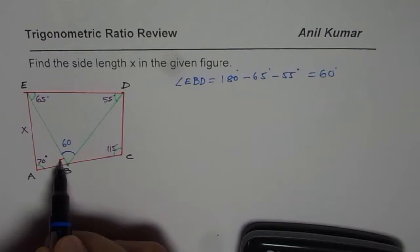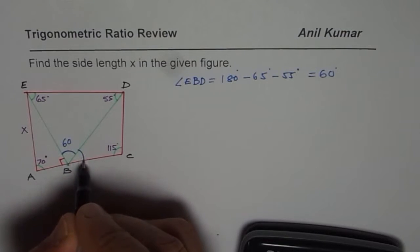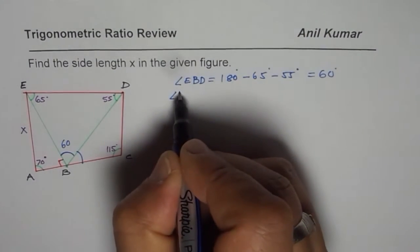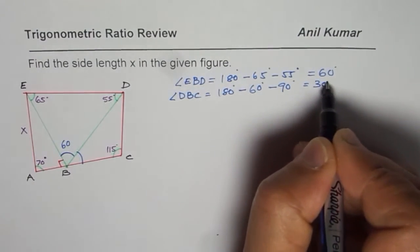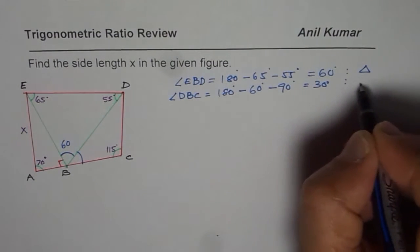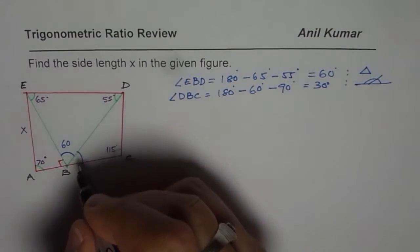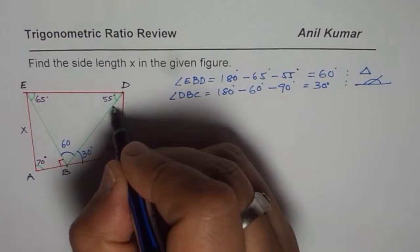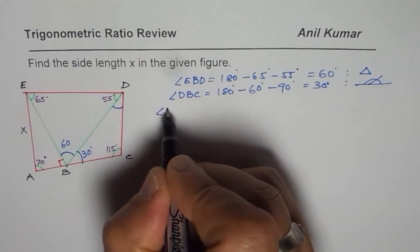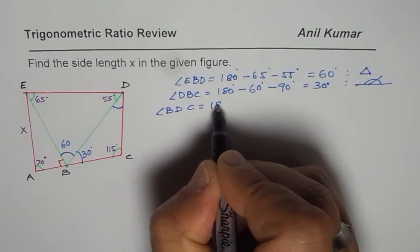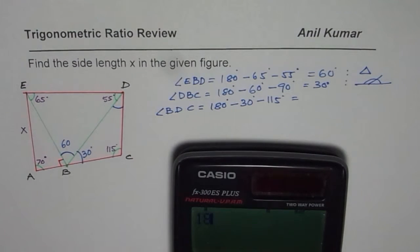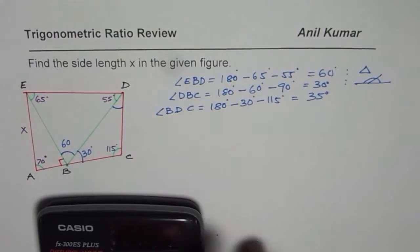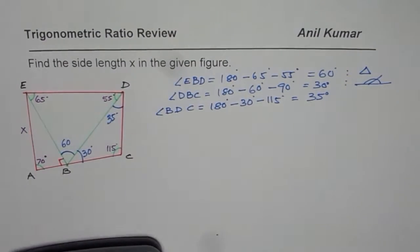Now we are given that one angle is 90 degrees and we found 60 degrees, so the remaining part must make 180 degrees on a straight line, giving us 30 degrees. Then angle BDC equals 180 degrees minus 30 degrees minus 115 degrees, which gives 35 degrees. So slowly we have got all the angles.